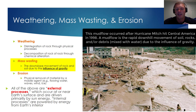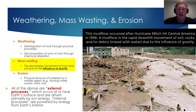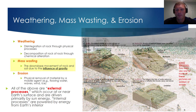Let's now transition to talking about mass wasting. Mass wasting is defined as the downslope movement of rock and soil due to the influence of gravity. Gravity is pulling down on everything, including you and I, and if rock and soil undergo weathering they are more susceptible to mass wasting. The key thing to remember is that it's the influence of gravity that ultimately triggers mass wasting events.